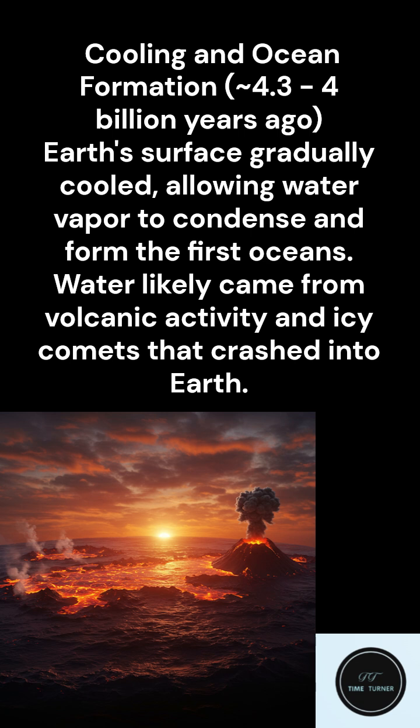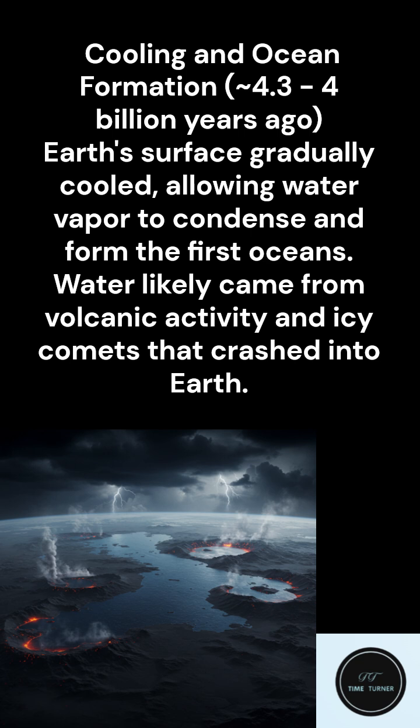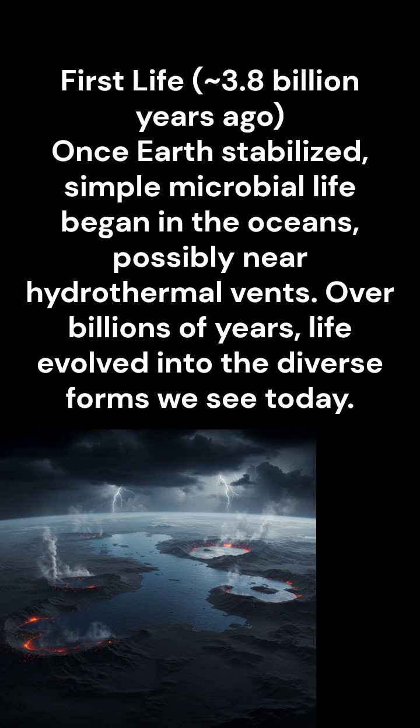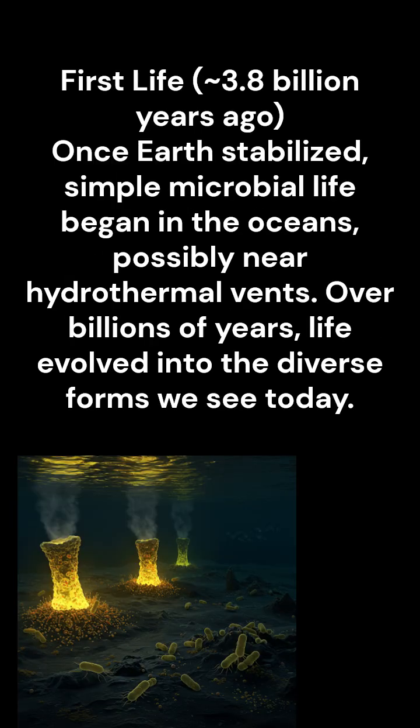Differentiation — what's that? Think about it like mixing oil and water: they separate. Inside the molten Earth, heavier elements like iron sank to the center, forming the core. So the Earth was basically sorting itself out. The lighter materials rose to the surface, eventually solidifying into the Earth's crust. It was a pretty violent birth for our planet.